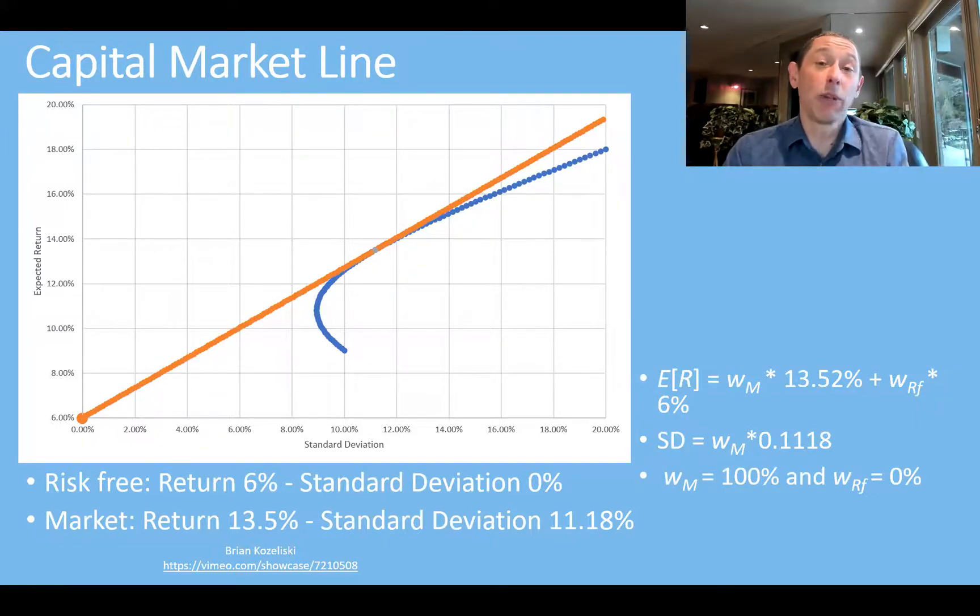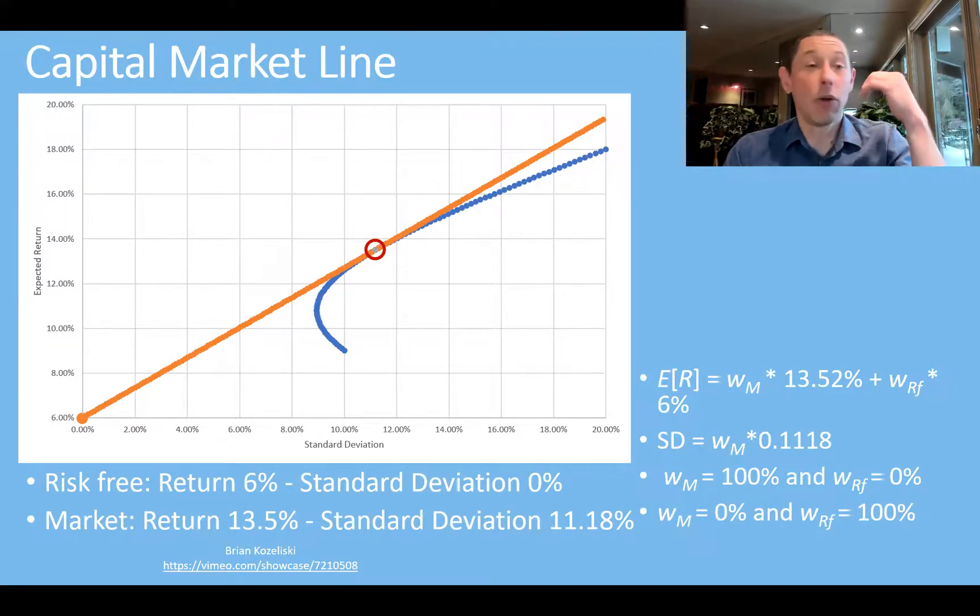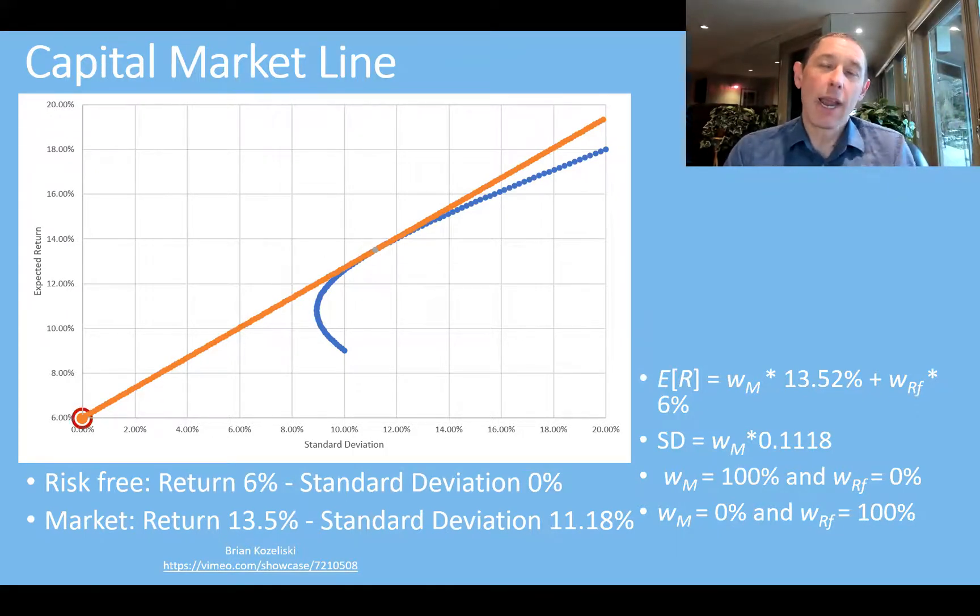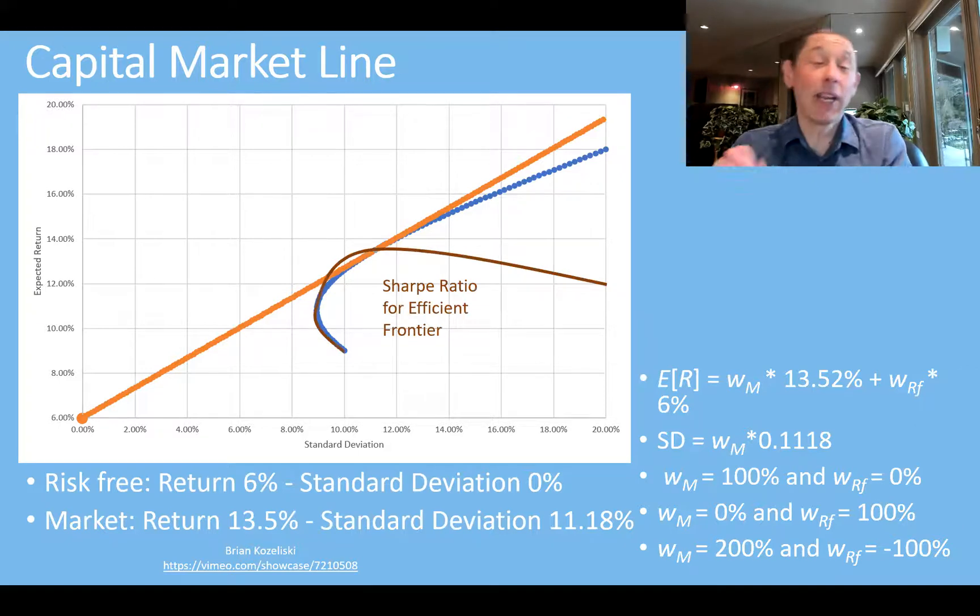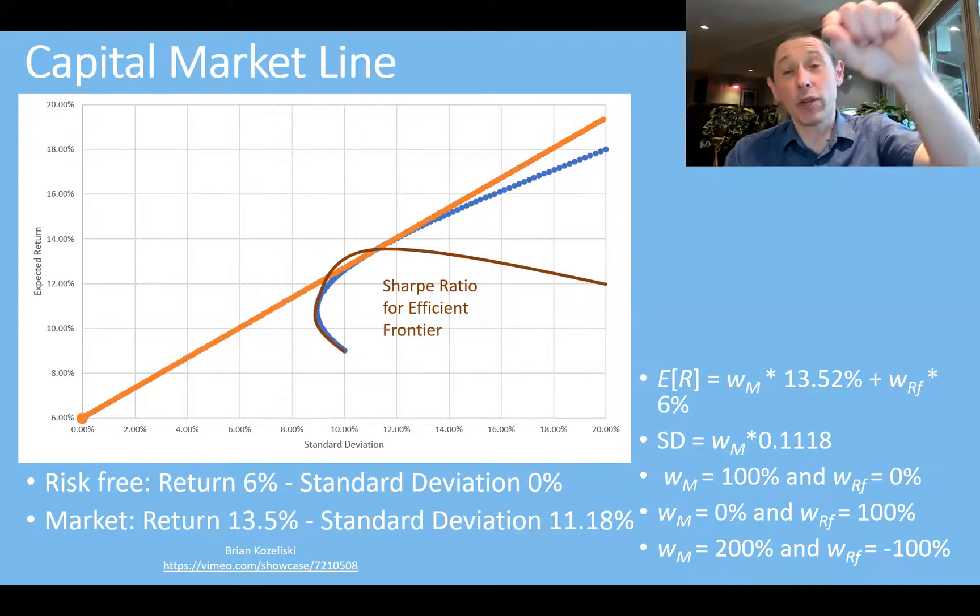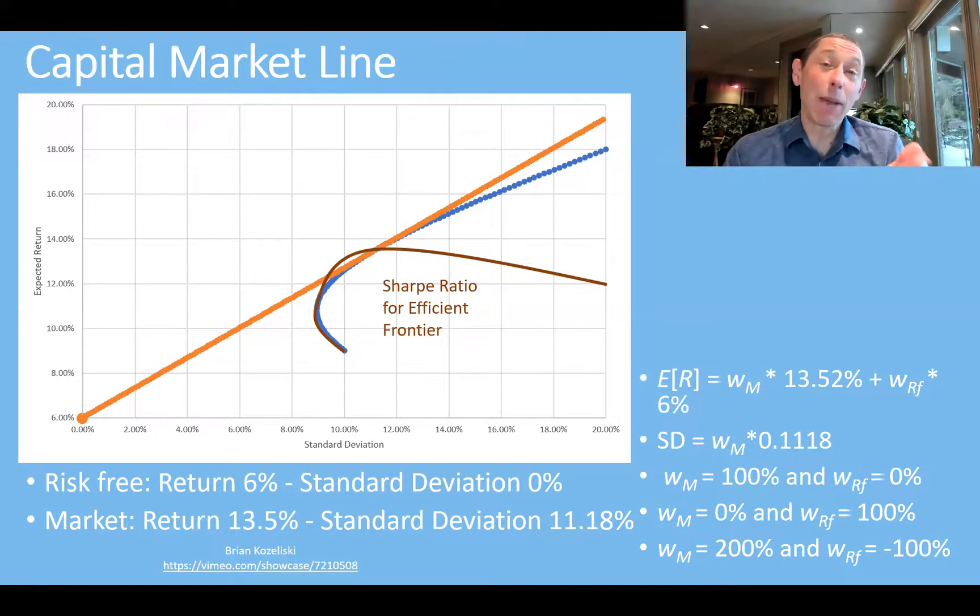So here we could go 100% in the market and 0% of the risk-free rate. We're going to be right there on that orange curve. We could be nothing in the market, 100% of the risk-free rate, putting us over here. We could do 200% in the market and then borrow in order to do that, so we're going to be negative 100% of the risk-free rate, and that's going to put us over here. Now, one thing that I mentioned is that sharp ratio. So this would be the sharp ratio for that efficient frontier. So it's lowest at that really unattractive portfolio with low returns and high risk, and then it improves as you get to the minimum variance portfolio, and it peaks right there at the market portfolio.